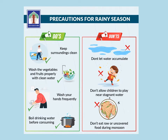What are the precautions for the rainy season? There are some do's and don'ts we need to follow. We must keep our surroundings clean, wash vegetables and fruits properly with clean water, wash our hands frequently, and boil our drinking water before drinking it. We shouldn't let water accumulate. Don't allow children to play near stagnant water. Don't eat raw or uncovered food during monsoon season.